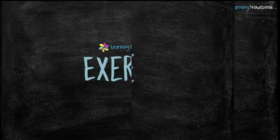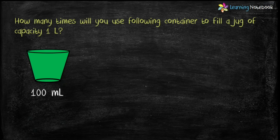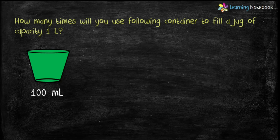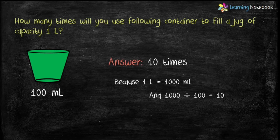Let's do some exercises. The question is: how many times will you use a container of capacity 100 ml to fill a jug of capacity one liter? We know one liter equals one thousand milliliter, and 1000 divided by 100 is 10. Therefore, we will use this container 10 times to fill a one-liter jug.